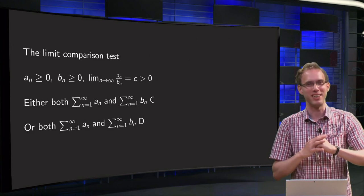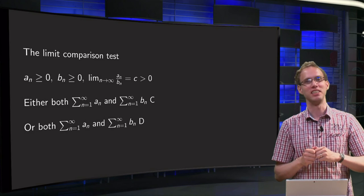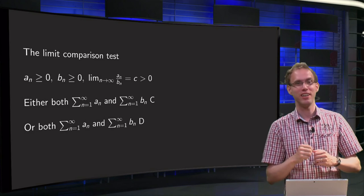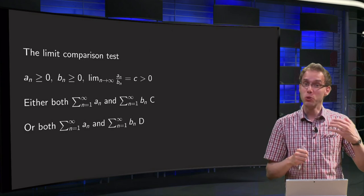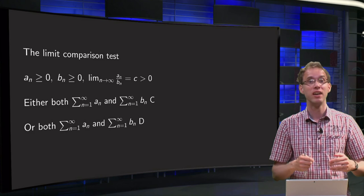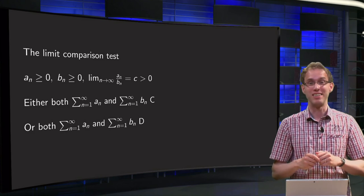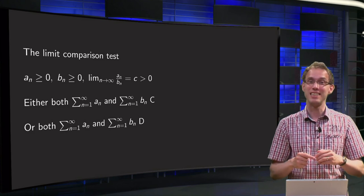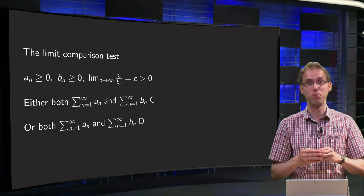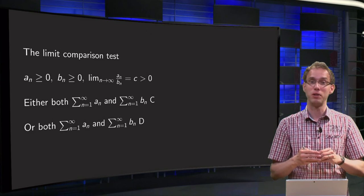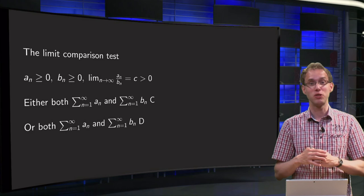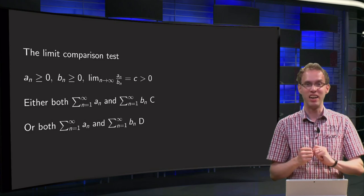We will now come to my favorite test, the limit comparison test. So why is it my favorite test? It works for many series, so you do not need to compute an antiderivative or to compare the full series. You only look at the tail of the series and see whether they tend to zero equally fast, which means you only need to compute one limit to establish convergence or divergence. That is what you will learn in this video.